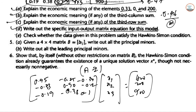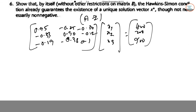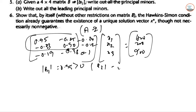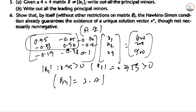Next, question E: check whether the data given in the problem satisfies the Hawkins-Simon condition. B1 is 0.95, which is positive. B2 taking the 2x2 leading principal minor gives 0.7725, which is positive. B3, the full determinant of (I minus A), is 0.6227, which is also positive. Therefore the Hawkins-Simon condition is satisfied.